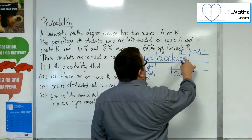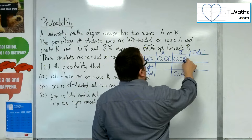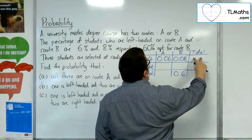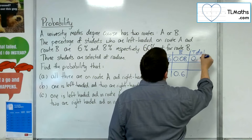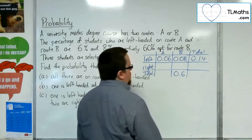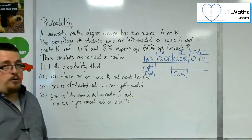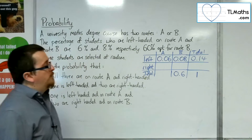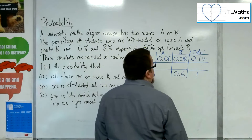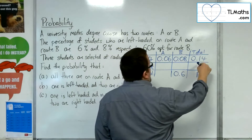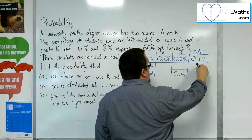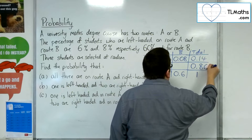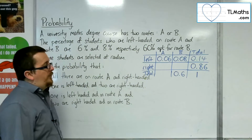So 0.06 and 0.08 — the total percentage of people who are left-handed on the maths degree course is 0.14, or 14%. Now I know that the total must add up to 1, or 100%, so that means the percentage of right-handed people must be 86%, so 0.86.